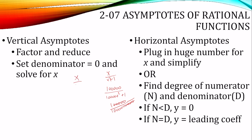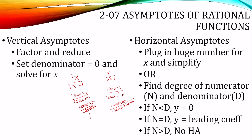If the degrees are the same, like x over x plus 1, you'd have 100,000 over 100,000 plus 1, which is approximately 100,000 over 100,000, which reduces to 1 — that's the ratio of leading coefficients, 1 over 1. If the degree of the numerator is higher, that would be like 100,000 squared over 100,000 plus 1, which leaves you with 100,000 on top — a large number — so there is no horizontal asymptote.